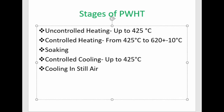The second stage is the controlled heating process, which takes place from 425°C up to the soaking temperature of approximately 620°C. From 425°C to the soaking temperature, the heating rate shall be controlled and conducted in a uniform manner.